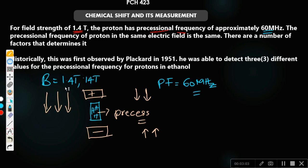If we increase the field strength to 14 tesla — that's an increase by a factor of 10, since 1.4 × 10 = 14 — it also means the precessional frequency will be increased by a factor of 10. So the precessional frequency becomes 600 megahertz. The precessional frequency of protons in the same electric field is the same.